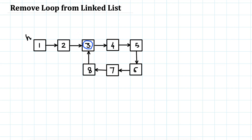In our earlier videos, we start from head and keep a slow and fast pointer, and they meet somewhere — let's say they meet at 5. Then we keep one pointer at 5 and one pointer at head. That meeting point confirms there is a loop. To find the first element, we kept one pointer at head and one at the meeting point, then advanced both by one step and they meet at 3.